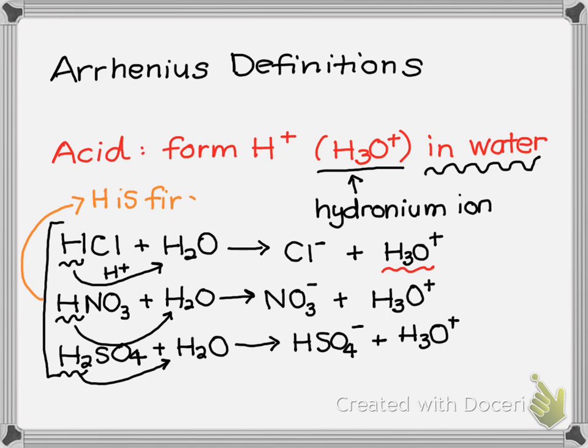One way we can recognize an acid from its formula is this hydrogen that's written first. It's that hydrogen, the H+, called a proton, that will come off to form the H3O+ and informs the acid.